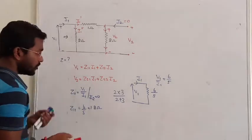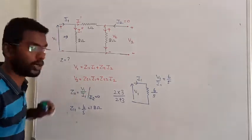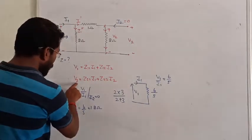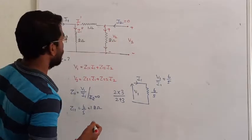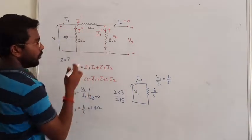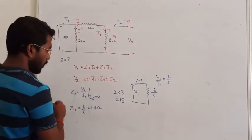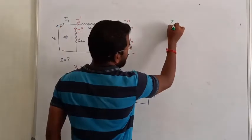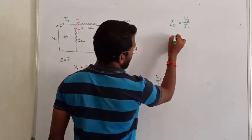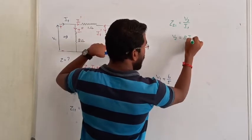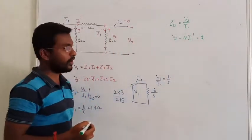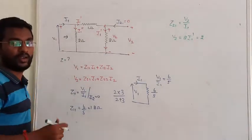Similarly, we have to calculate Z21 when I2 is 0. Z21 is the value of V2 to I1 when I2 is 0. Closely observe the circuit. V2 is equal to 2 times I1 dash, not I1. I don't have the direct relation, so I need to find I1 dash in terms of I1 using current division rule.